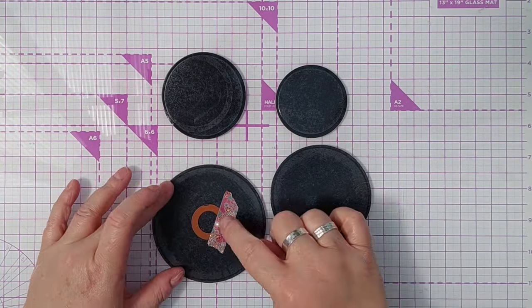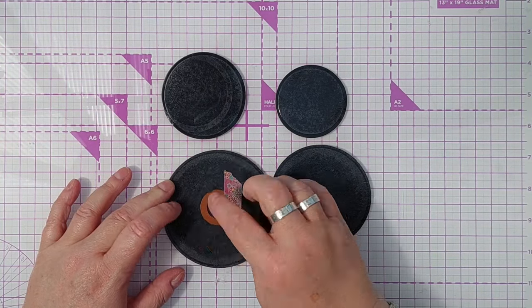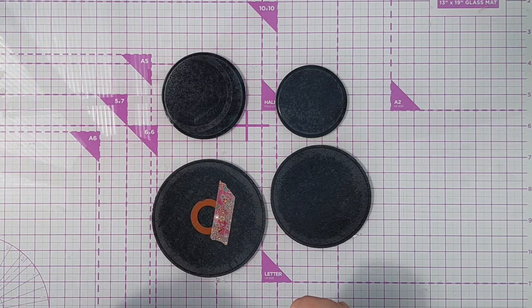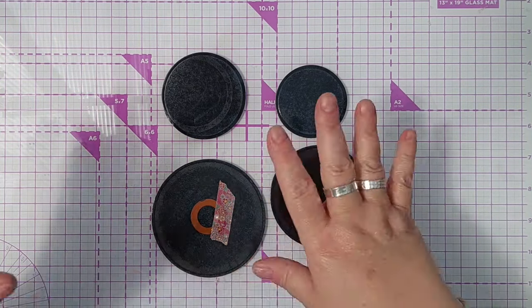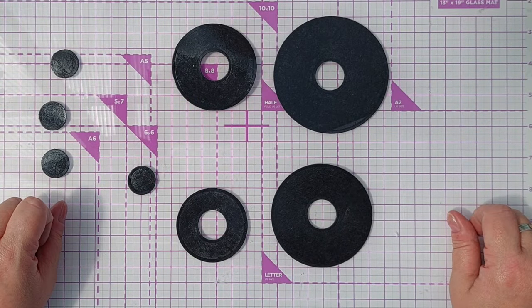Now what I'm going to do next is cut a hole using the smallest circle die that I've got, roughly in the middle. It doesn't have to be perfectly in the middle because I'm going to cover this up with the label, but I just want a hole in the middle so you can see through it when it's all put together. Now I've got a hole in the middle of all my records.